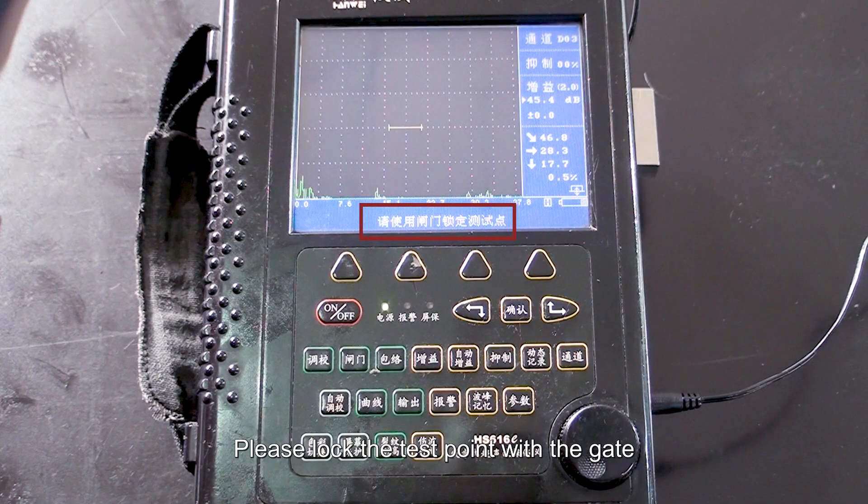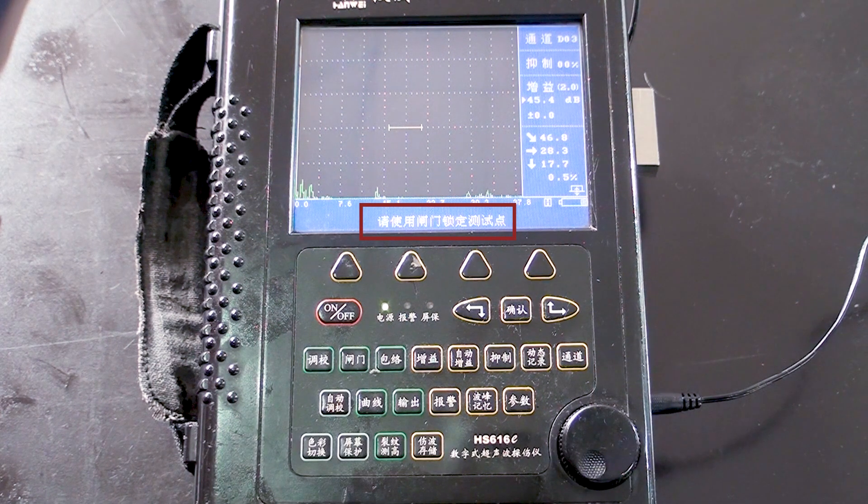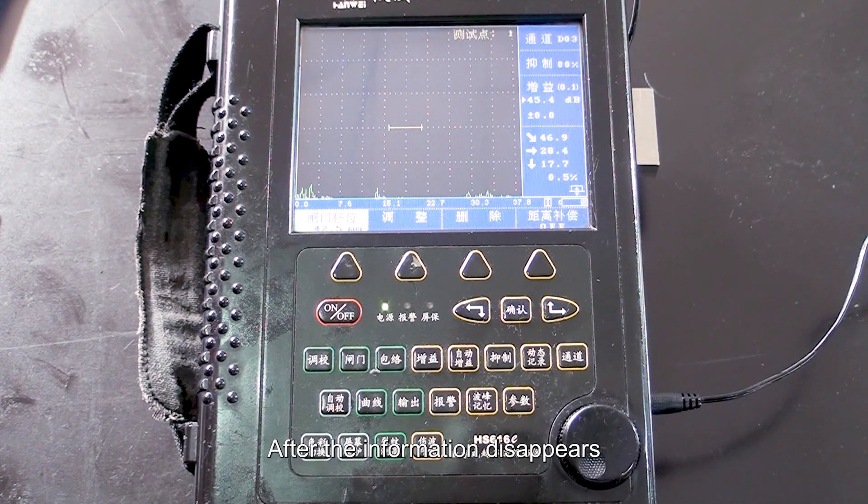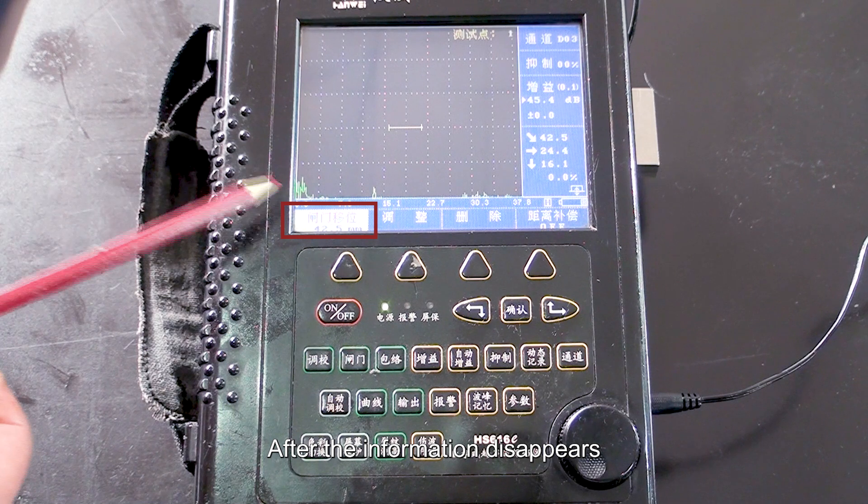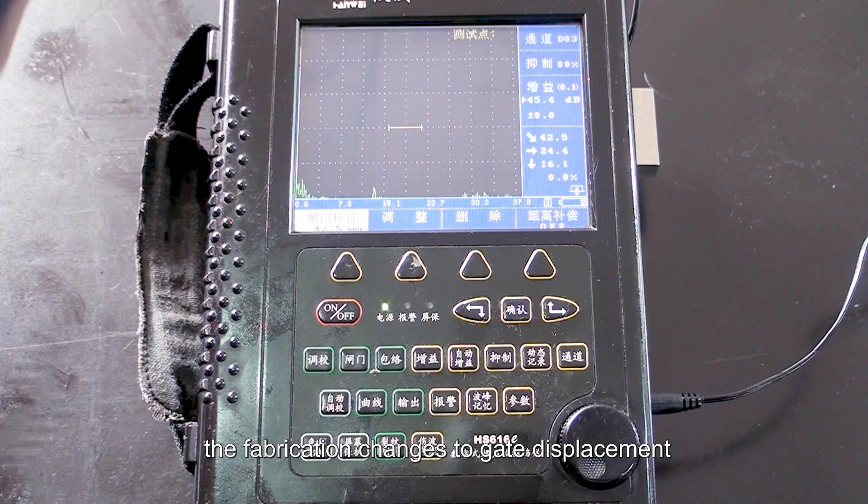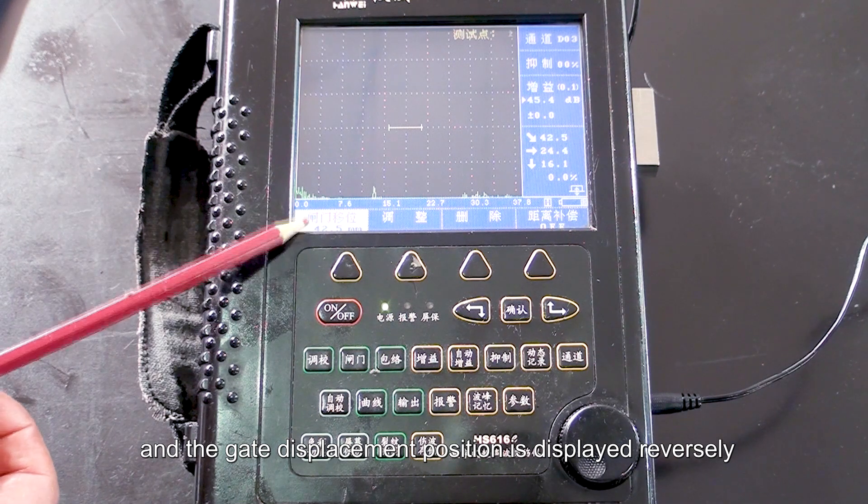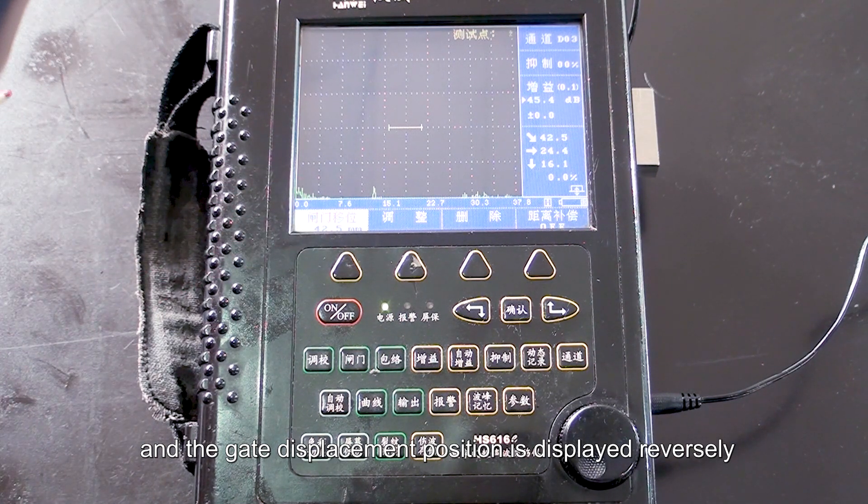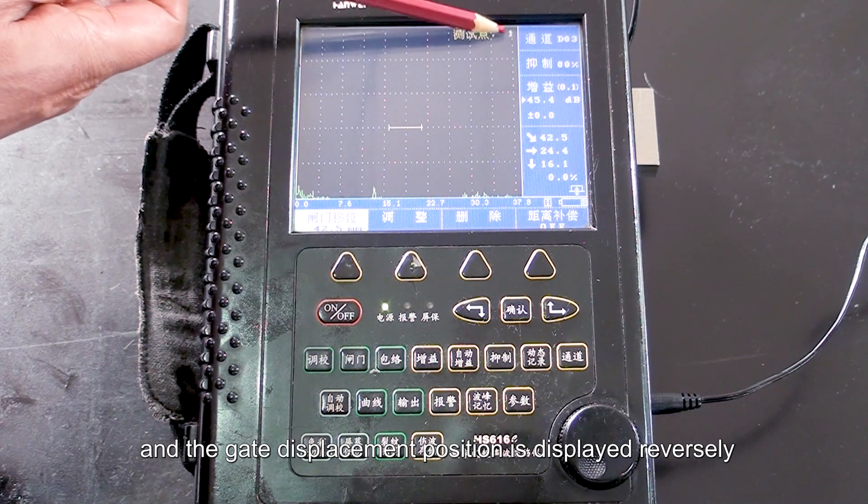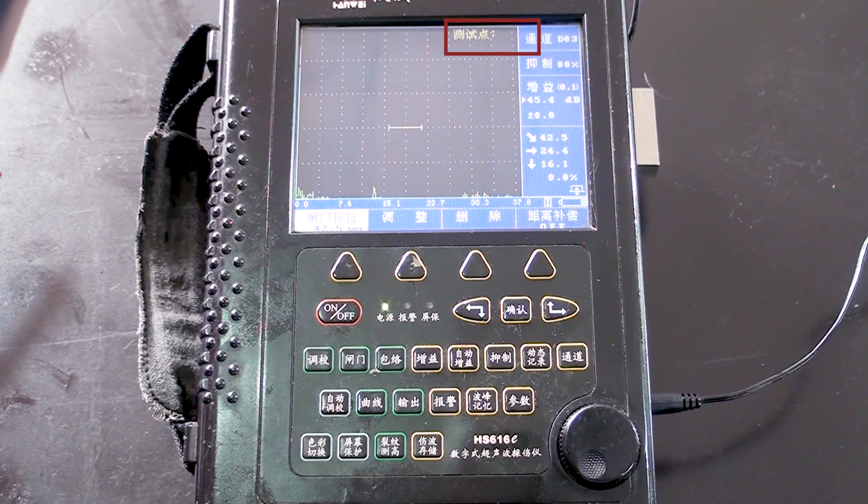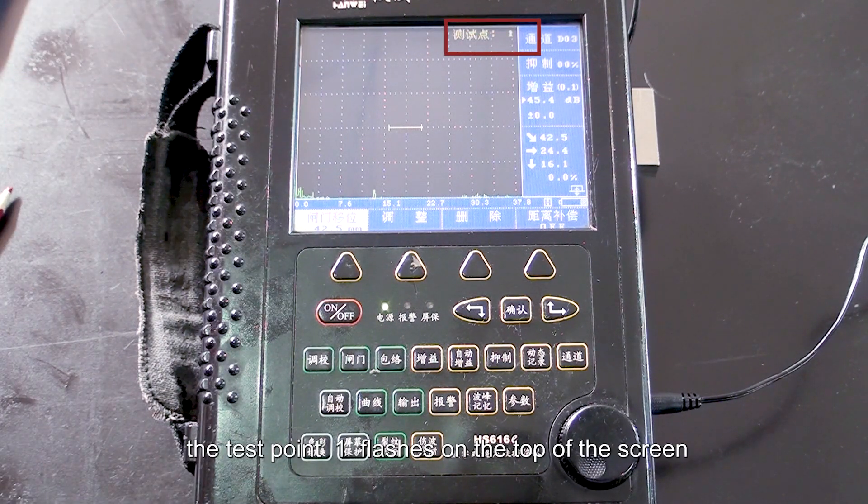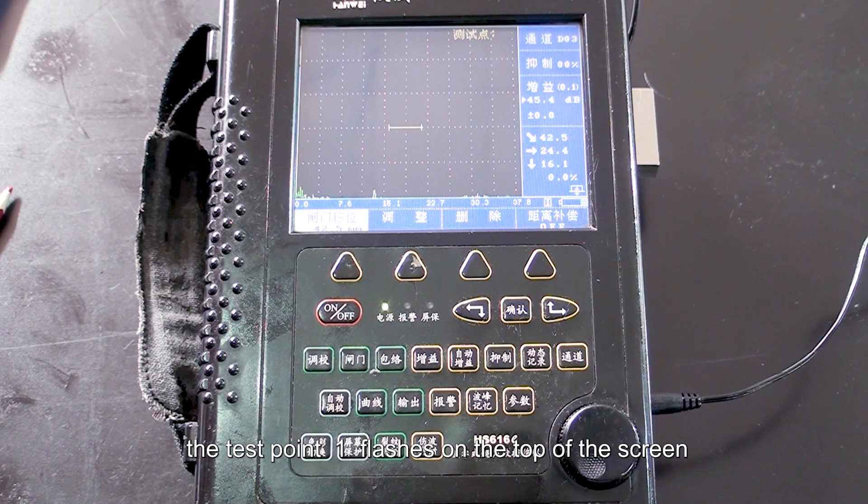Please lock the test point with the gate. After the information disappears, the fabrication changes to gate displacement, and the gate displacement position is displayed reversely. At the same time, the test point 1 flashes on the top of the screen.